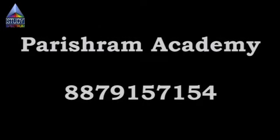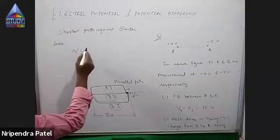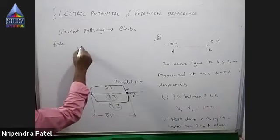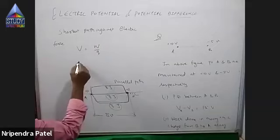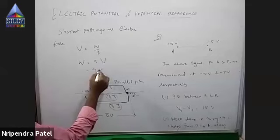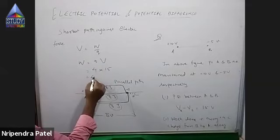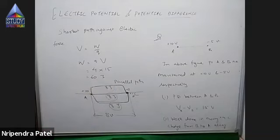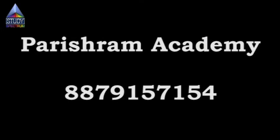The answer is 60 joules. Why? The potential difference between A and B is 10 minus (−5) = 15 volts. Using the definition, potential difference equals work done per unit charge, so work done equals Q into V = 4 coulombs into 15 volts = 60 joules.